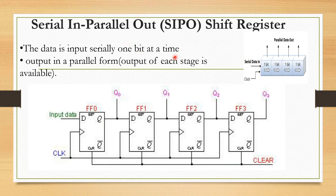In Serial In Parallel Out, data is input serially 1 bit at a time, but the output is in parallel form. The output of each stage is readily available. The figure is almost the same as SISO, but Q0, Q1, Q2, and Q3 outputs are all available simultaneously as parallel output. This is how Serial In Parallel Out shift register works — data input is serial and output is parallel.